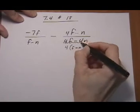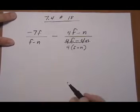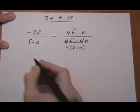So let's just cross that out. And now we want to build the LCD. We can't factor the first one there, we just leave it as F minus N.